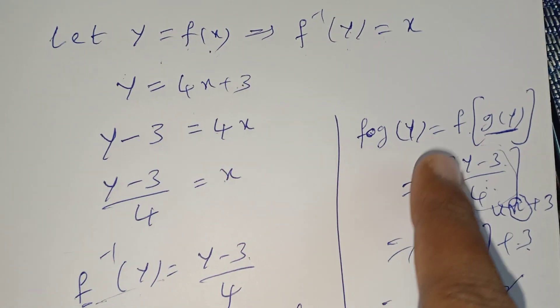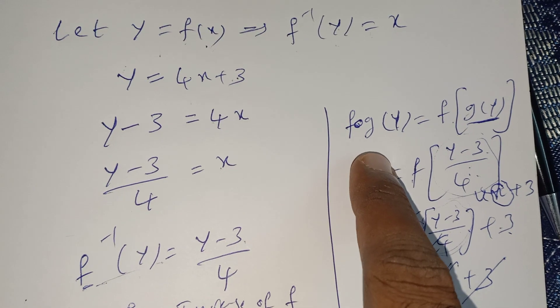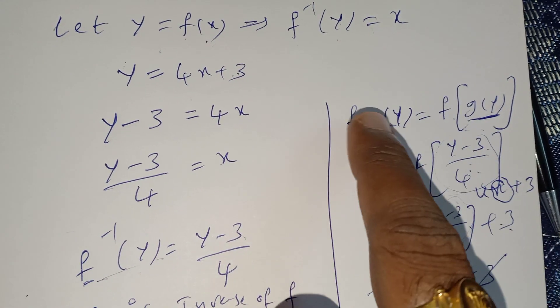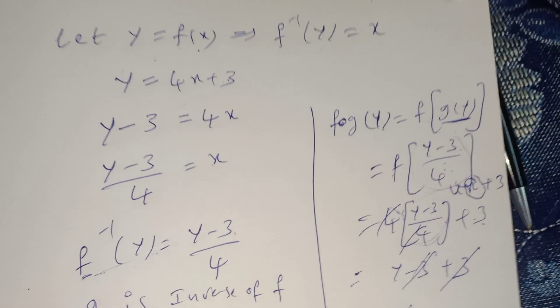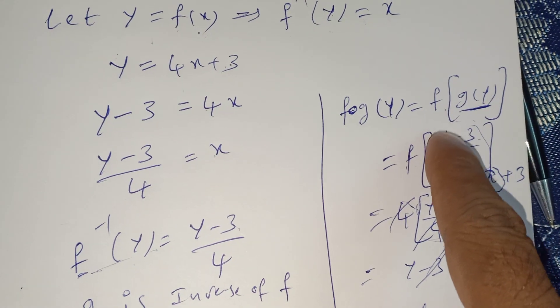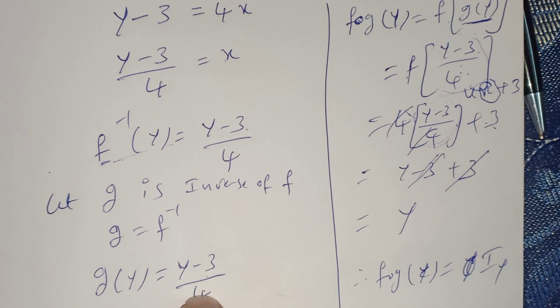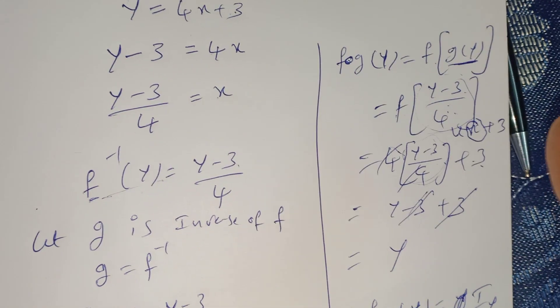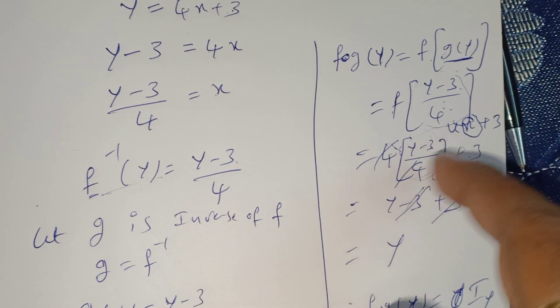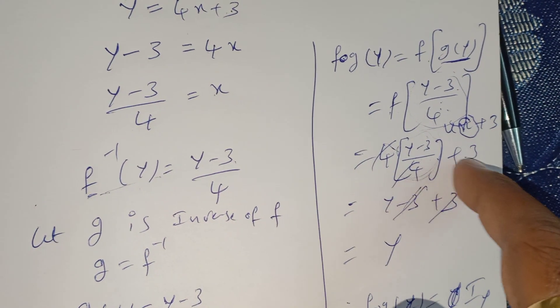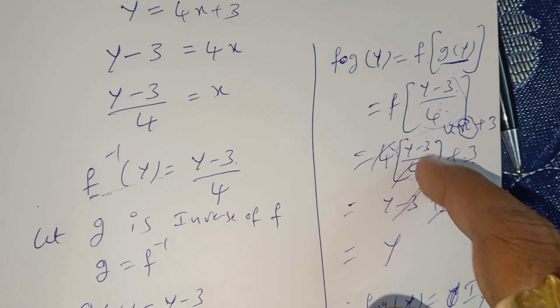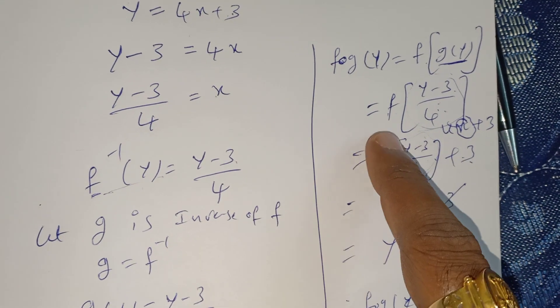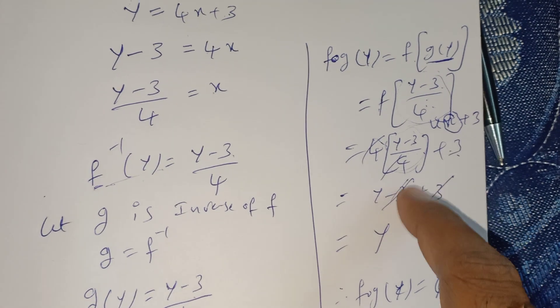Next, consider f∘g(y): f(g(y)). Remove the circle and write f(g(y)). In place of g(y) we know g(y) = (y - 3)/4, so substitute (y - 3)/4. We know f(x) = 4x + 3, so in place of x substitute (y - 3)/4: 4·(y - 3)/4 + 3. The 4s cancel: y - 3 + 3. The 3s cancel, giving y.